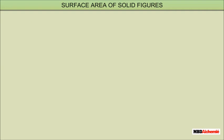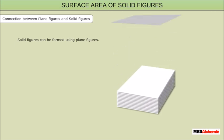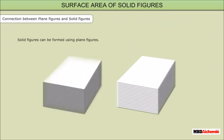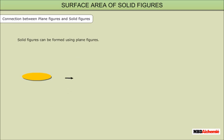Surface Area of Solid Figures. Solid figures can be formed using plane figures. In the animation, we have shown how a cuboid can be formed from a rectangle. First, place a rectangular sheet, then go on adding rectangular sheets one above the other, and at the end of this process we get a cuboid. Similarly, a cylinder can be formed by placing circular discs one above the other vertically.